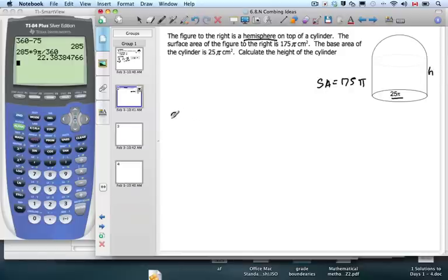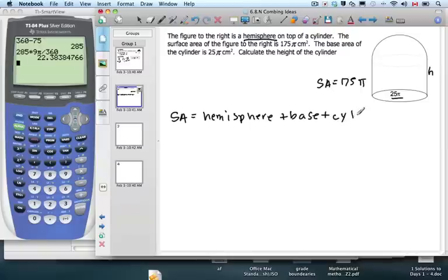Well, let's talk about what the surface area is, how would we find that? We have a hemisphere plus the base of the circle, plus the curvy part of the cylinder. Let's just go ahead and talk about this.